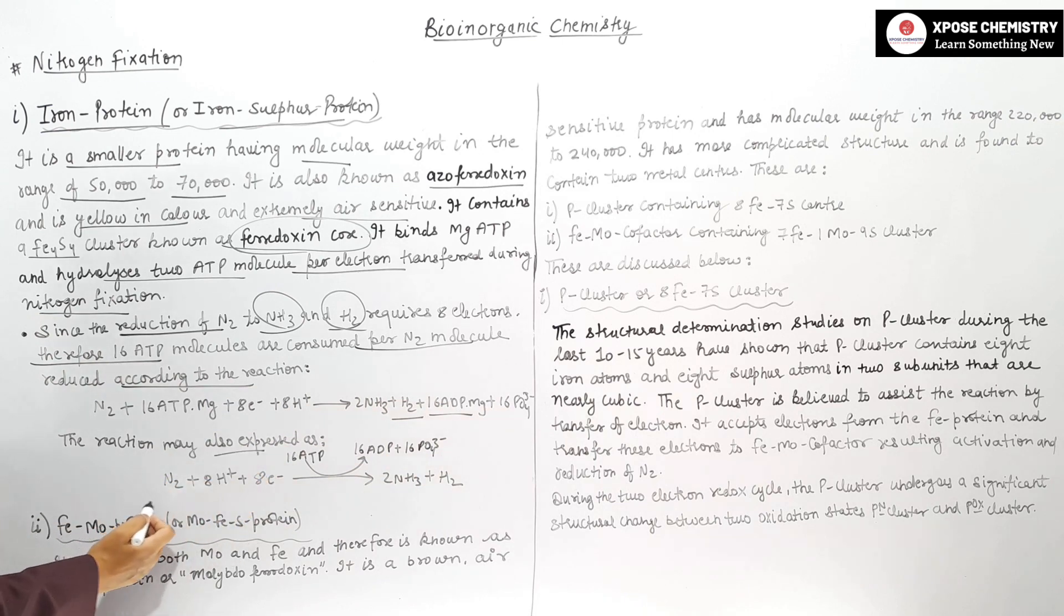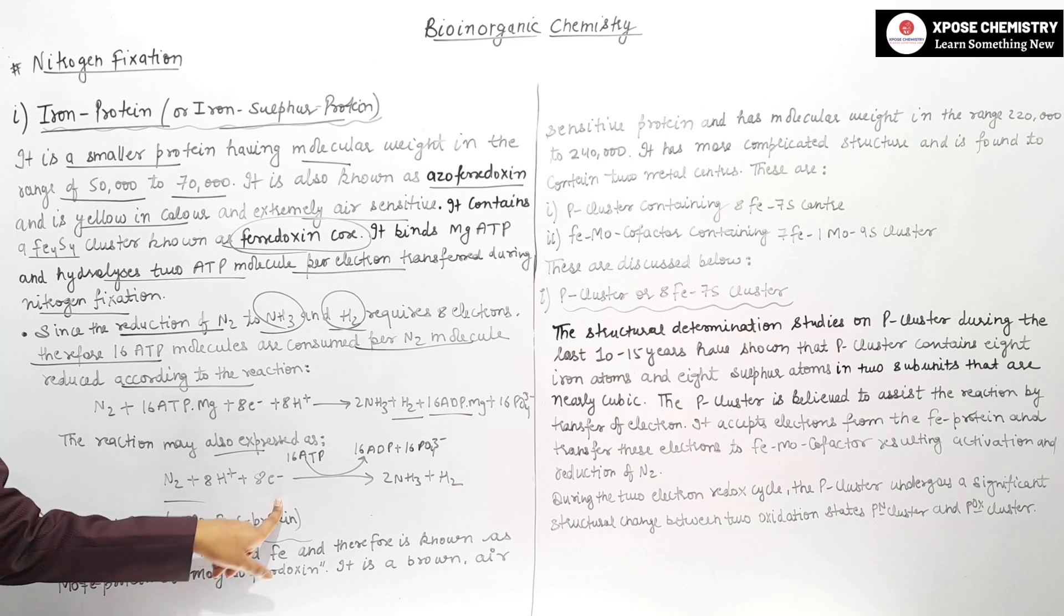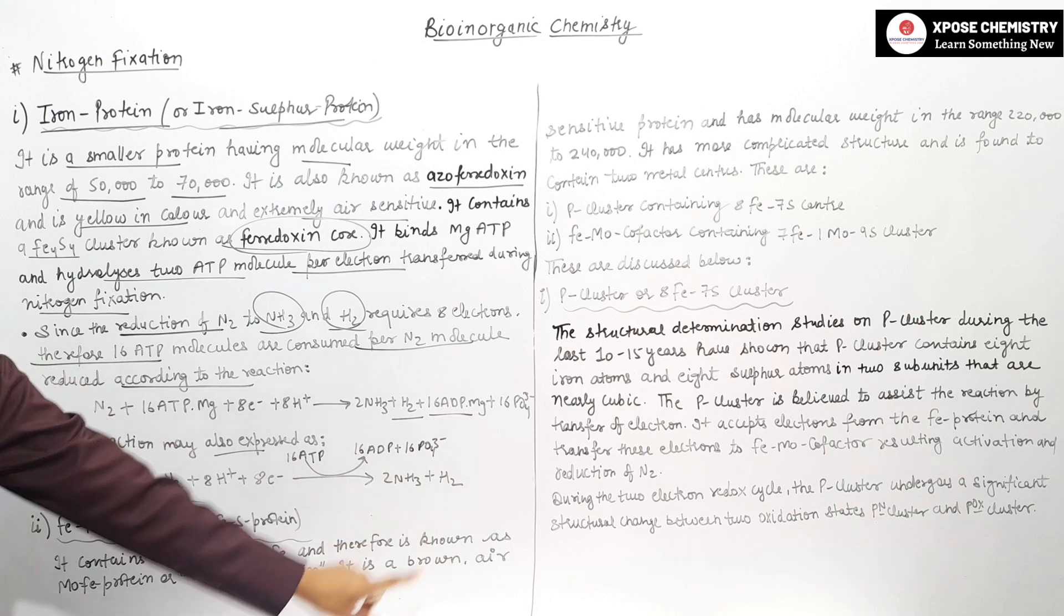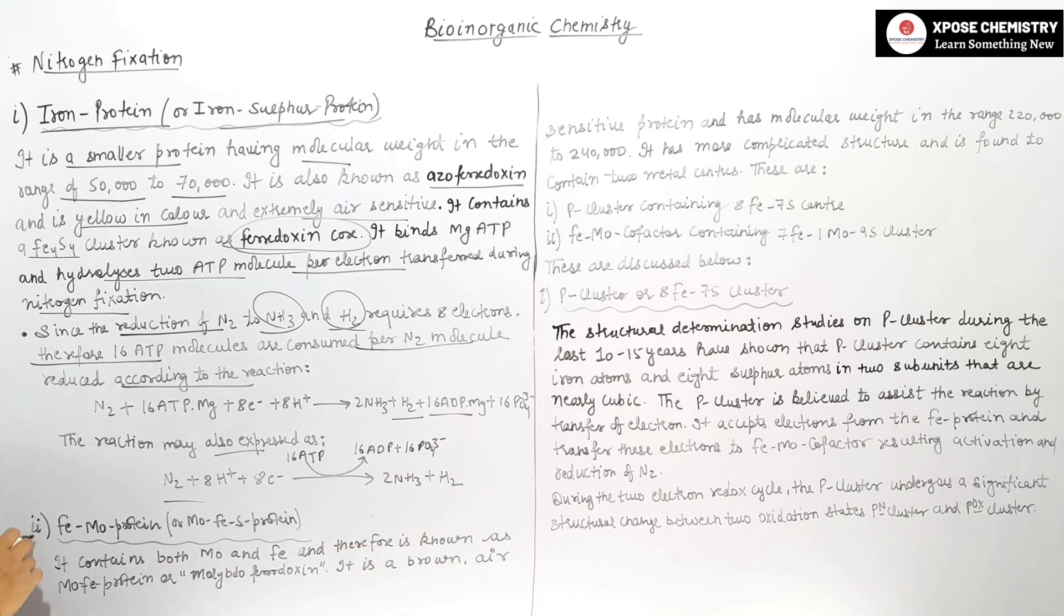We can also express the reaction as N2 plus 8 hydrogen ions plus 8 electrons, showing 16 ATP to 16 ADP plus 16 phosphate 3 negative, gives 2 NH3 plus H2.